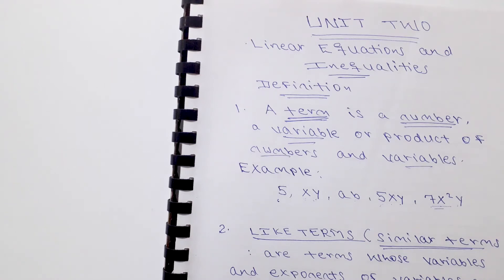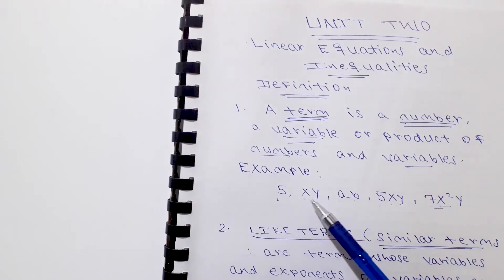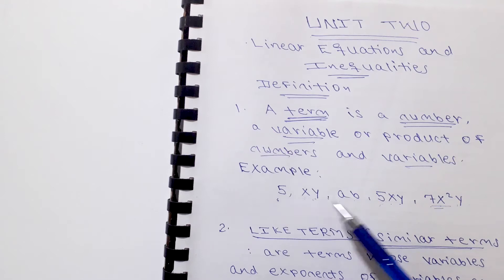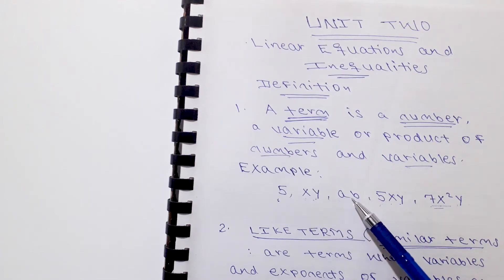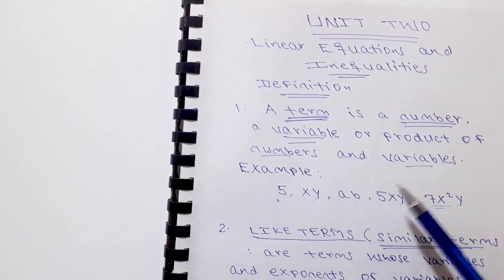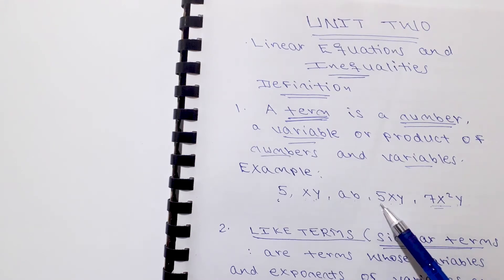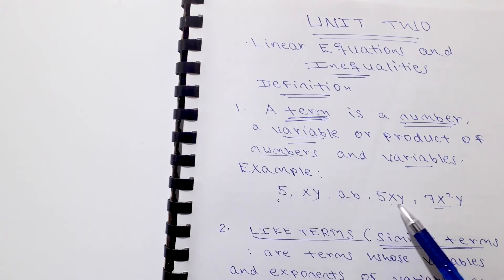For example, a term can be a number, or a term can be a variable. A times B is a variable — for example, five times x times y. A number times variables gives us a term.